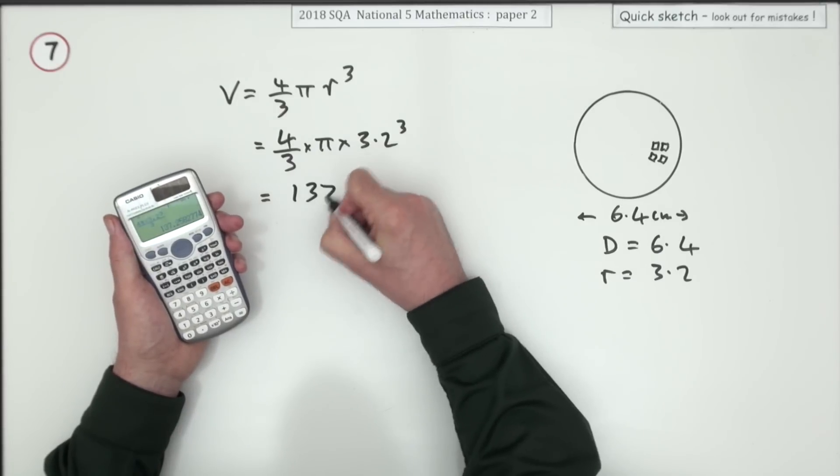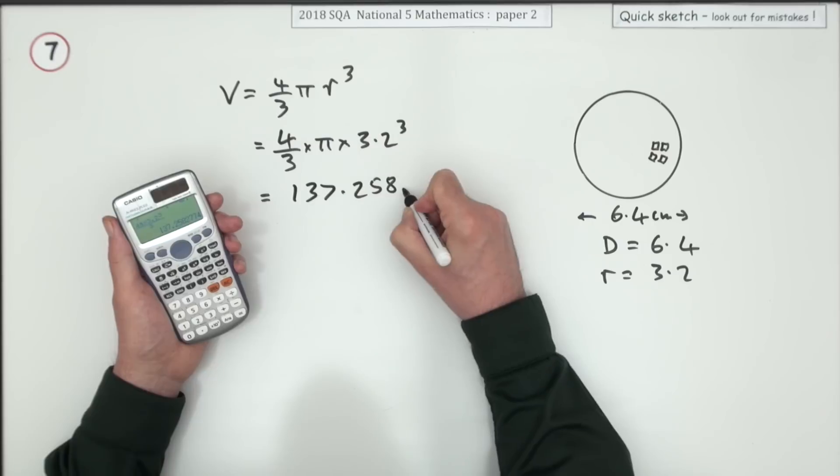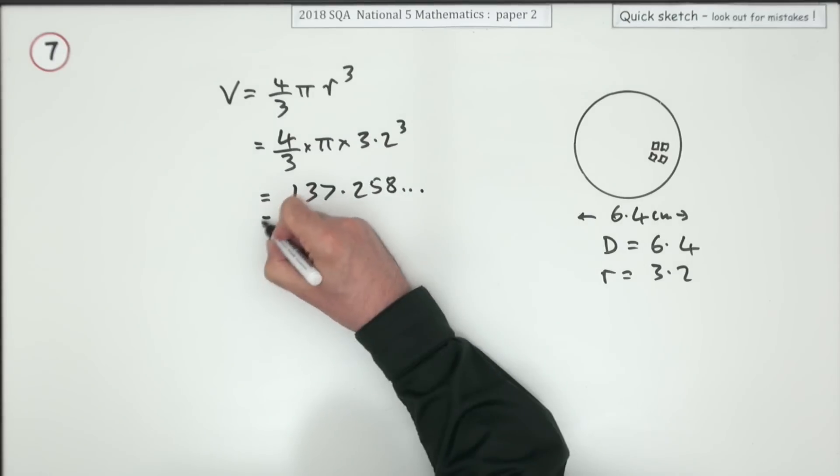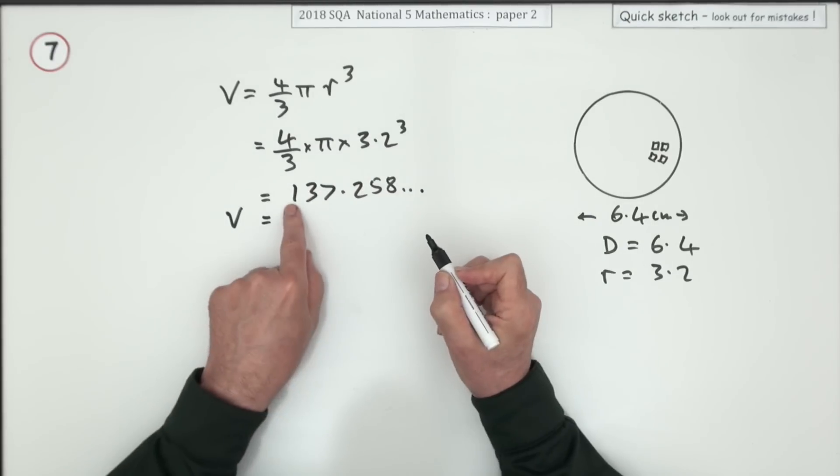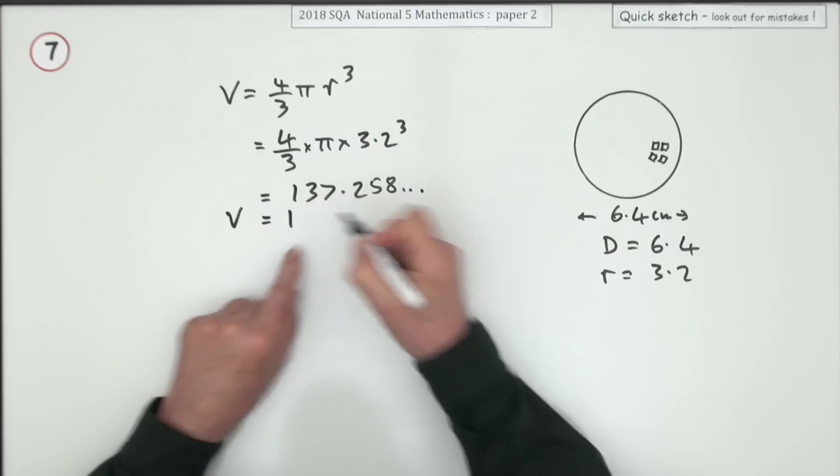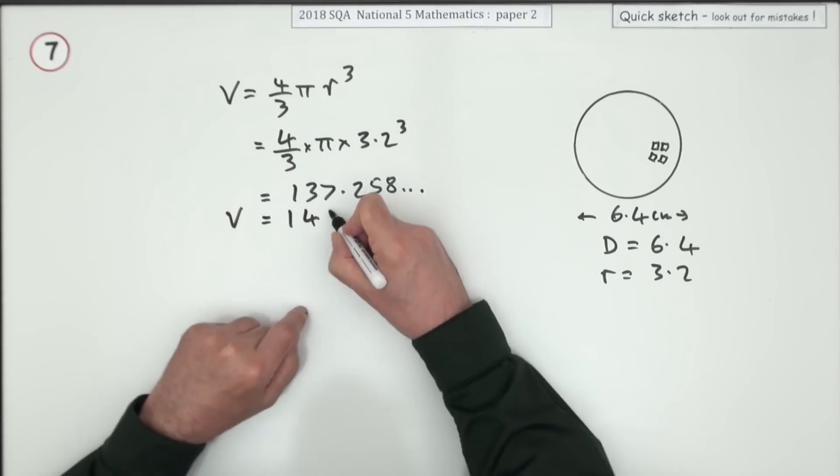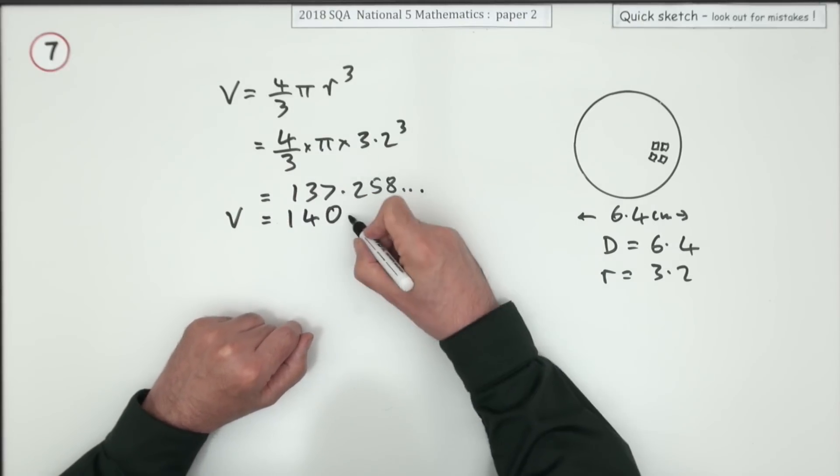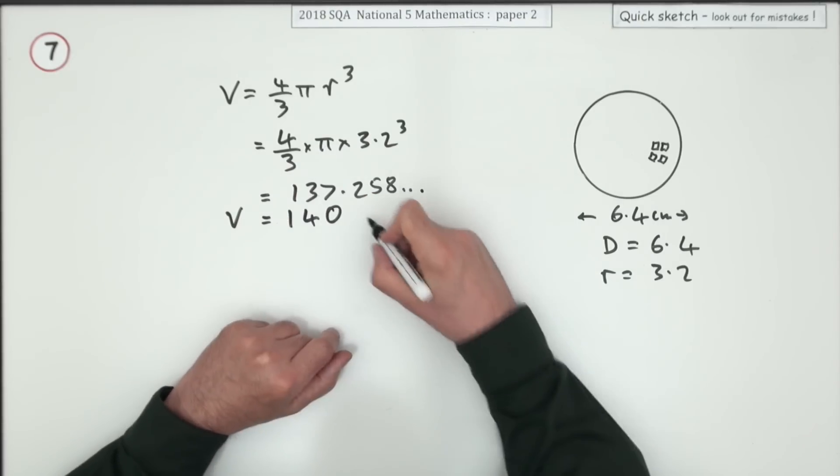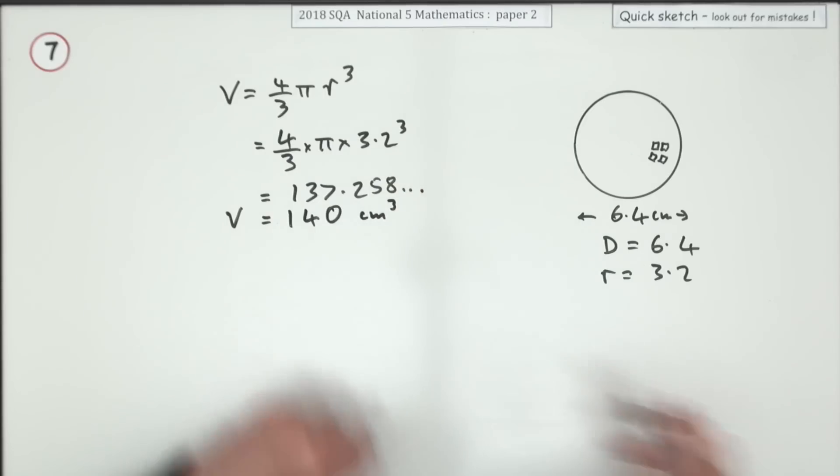Now when you do that you get 137.258 and so on, but it said two significant figures so that's the first two figures. That's the one and the three, but it's followed by a seven so round up, and it's in the hundreds. So 140, centimeters cubed.